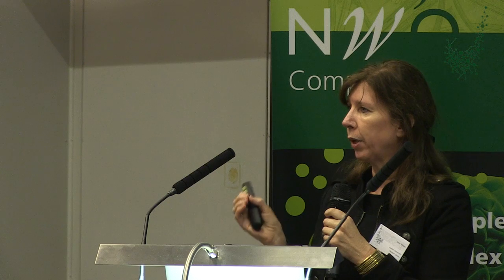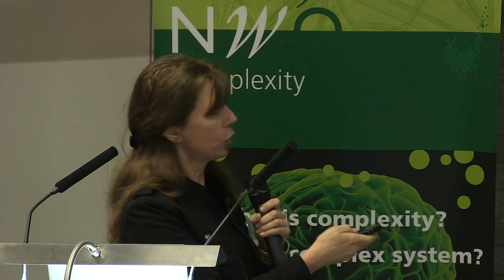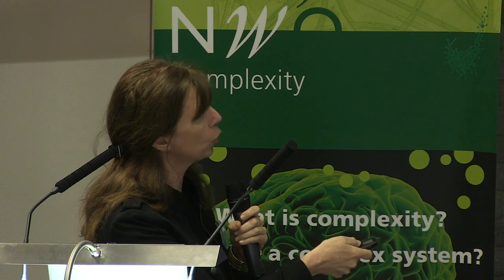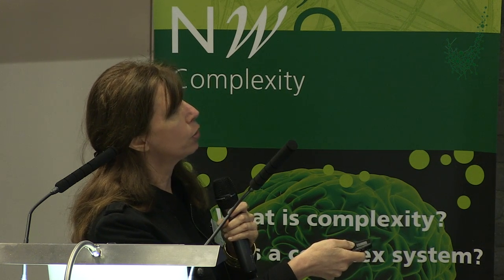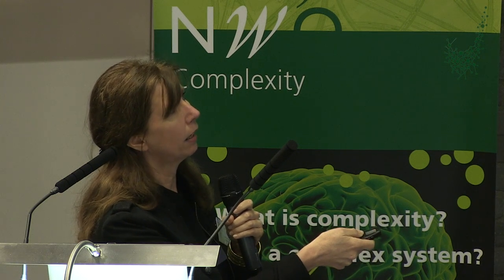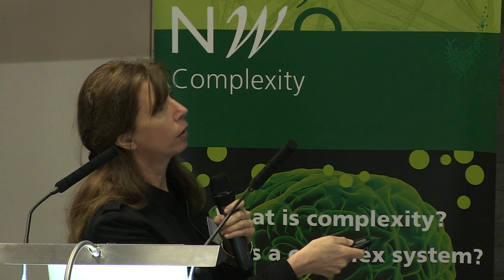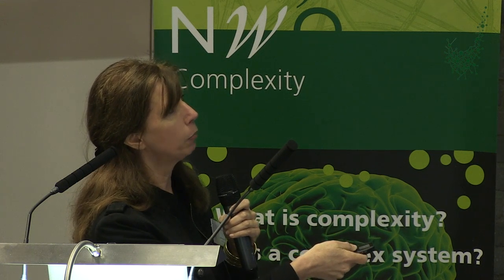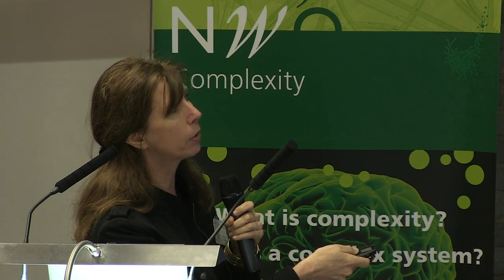Biological clocks are sensitive to light in a very particular way. The sensitivity to light depends on the time of day at which light is perceived, and this is the same for nocturnal and diurnal animals alike. Here you see a mouse released in constant darkness with a period slightly shorter than 24 hours. If we expose the mouse to 15 minutes of light at the end of the night, the clock is phase-advanced and the animal starts activity earlier. Whereas if the animal sees light at the beginning of the night, the clock is delayed and the rhythm shifts to later times.